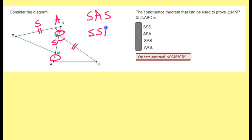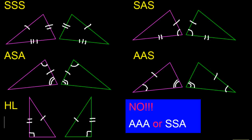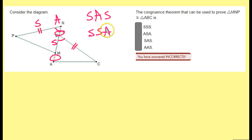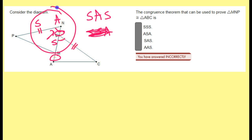We have two sides and an angle — so will that be side, angle, side, or side, side, angle? Remember, there is no side, side, angle, so that takes that out immediately. Plus, look what we have: the two sides and the angle that's in the middle between the two sides. So side, angle, side should be the answer.